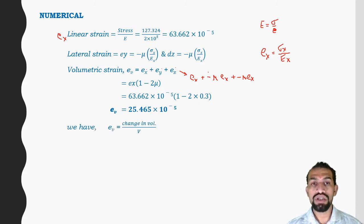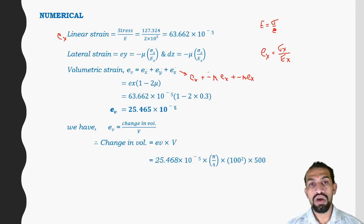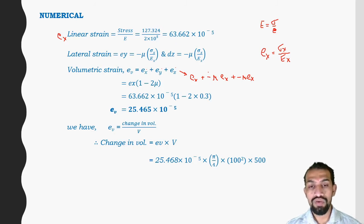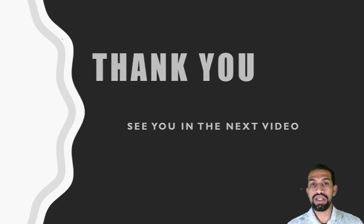Volumetric strain = change in volume / original volume, so change in volume = volumetric strain × original volume. Original volume = (π/4) × diameter² × length. Substituting values, change in volume dV = 1000 mm³. Thank you, see you in the next video.